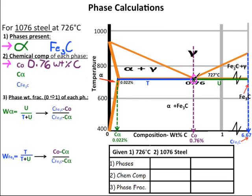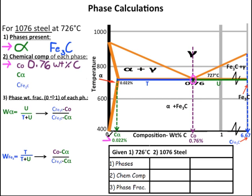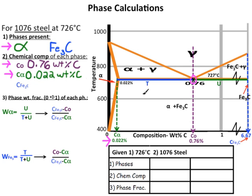Now let's find the chemical composition of each phase. To find the chemical composition of alpha, we go horizontally to the left, straight over to this line right here, which represents the solubility limit of carbon in alpha. Then we go straight down from this intersection point and read off the composition, which is the composition of alpha in weight percent carbon. So our chemical composition of alpha is 0.022 weight percent carbon. To find the chemical composition of iron carbide, we go from our x, skipping over to the right, to this line right here, which represents the composition of iron carbide. Then we go from this intersection point down to the x-axis and read off the composition. So our composition of iron carbide is 6.67 weight percent carbon, which it always is because it is a compound, not a solid state solution.